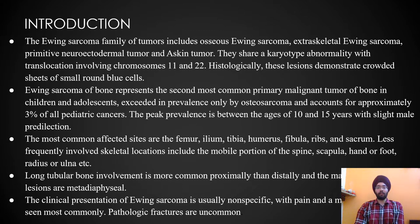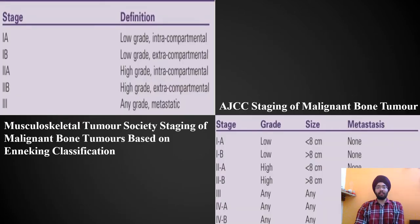Ewing sarcoma of the bone represents the second most common primary malignant tumor of bone in children and adolescents. The most commonly affected sites are the femur, ileum, tibia, humerus, fibula, and ribs. Less frequently involved skeletal locations include the spine, scapula, hand, and radius. In long tubular bone involvement, proximal is more common than distal.